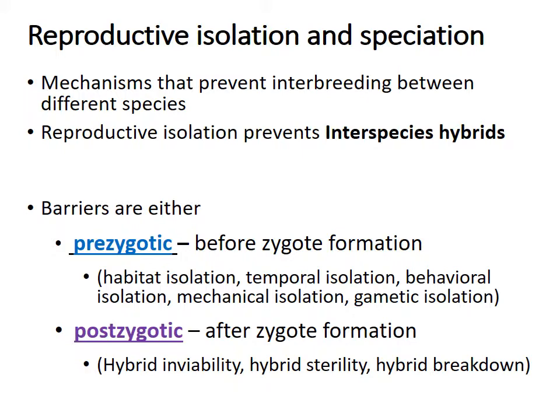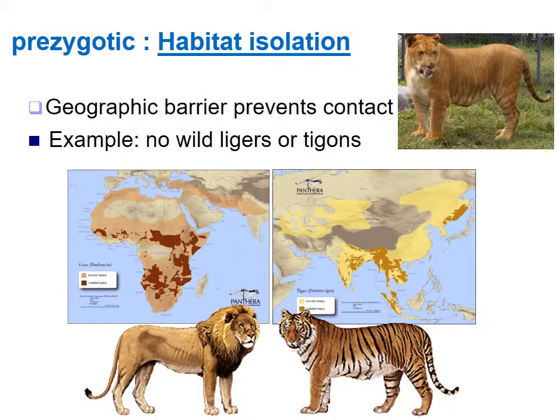A prezygotic isolating mechanism is habitat isolation — when geographic barriers prevent contact. If they're literally not in the same area, they can't mate or interbreed, so they would be different species. There are no wild ligers or tigons because in the wild the ranges of the lion and the tiger do not overlap and never did.